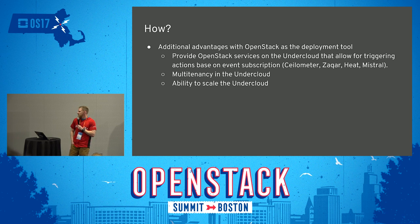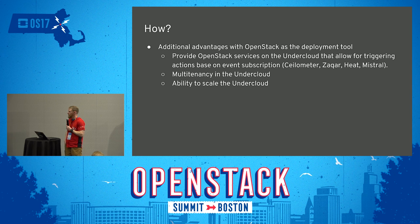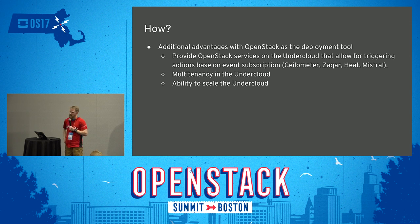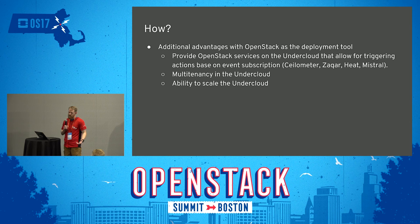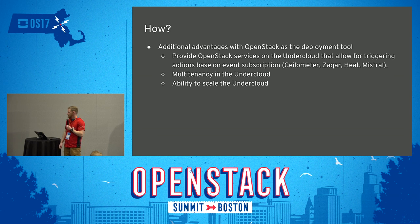Since we actually control installing the undercloud, we're able to be specific about what OpenStack services we include. So if you wanted to include projects like Ceilometer, Zaqar, and things like that on your undercloud to manage your overcloud, you're able to do that. You could have Ceilometer emitting events to a Zaqar queue, then Heat consuming those events and triggering a Mistral workflow — setting up a whole chain of event subscription processing using just OpenStack.